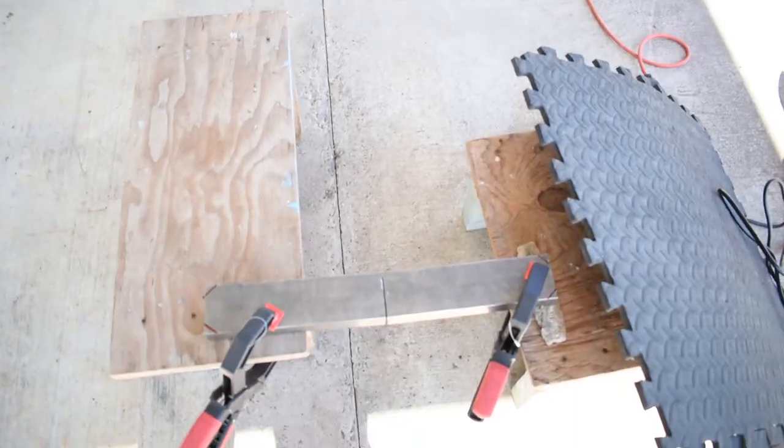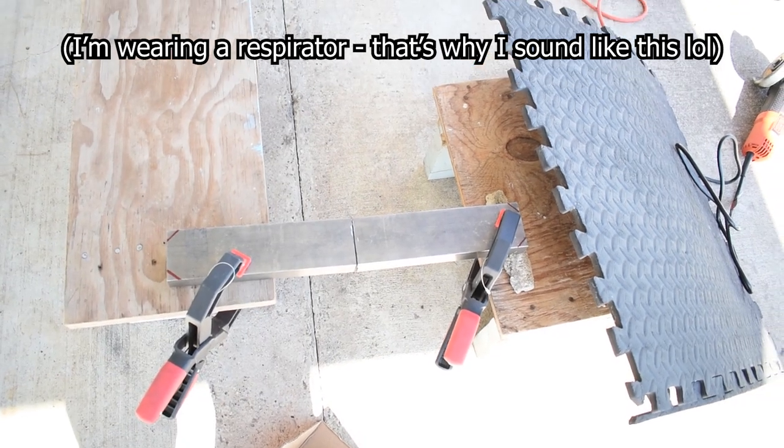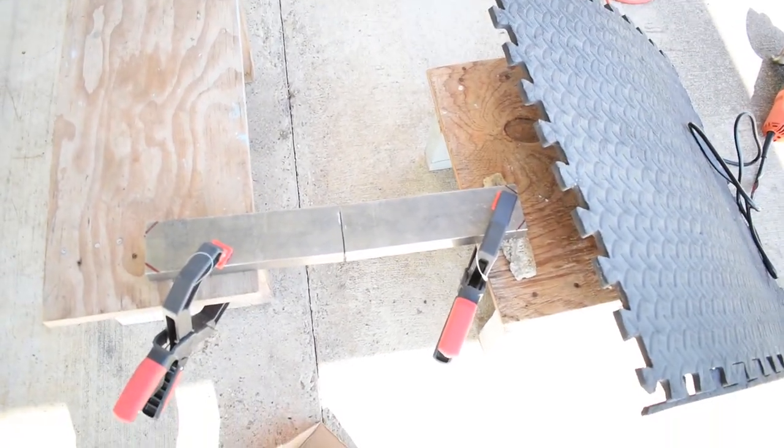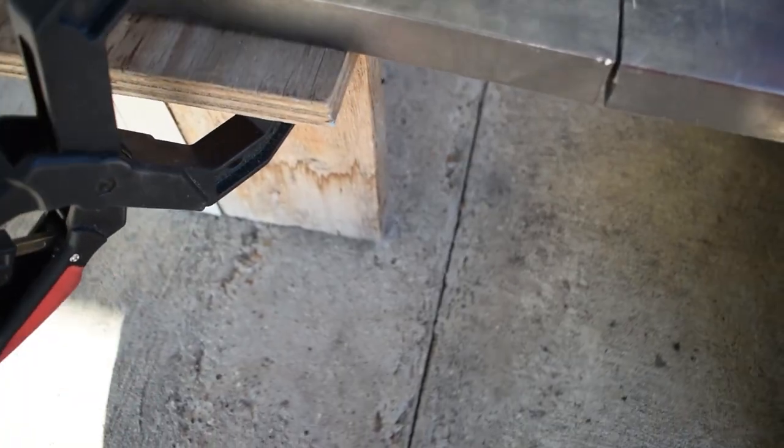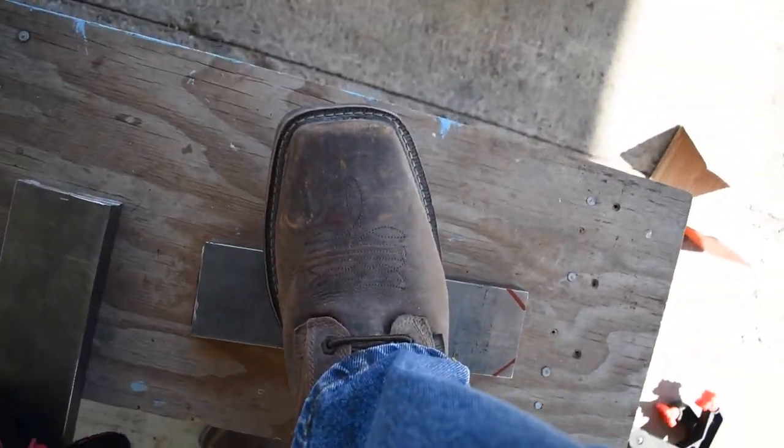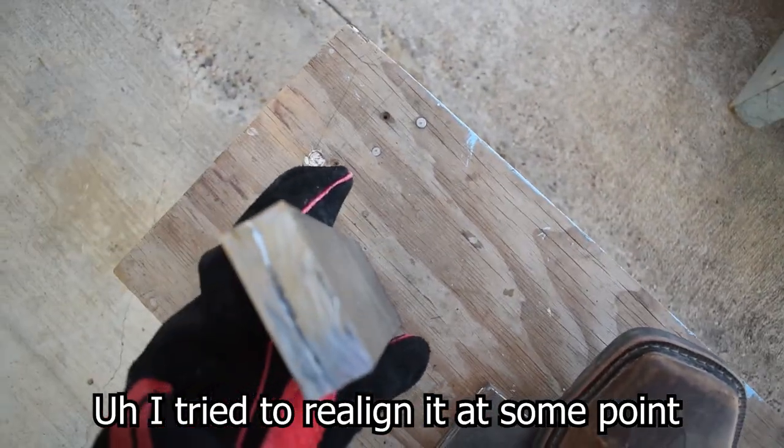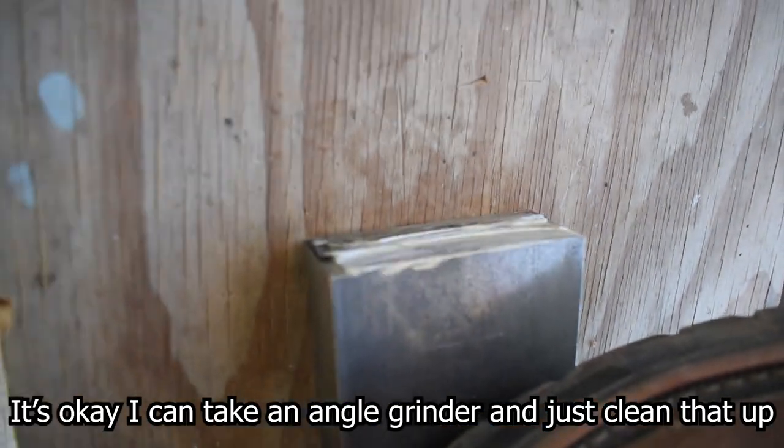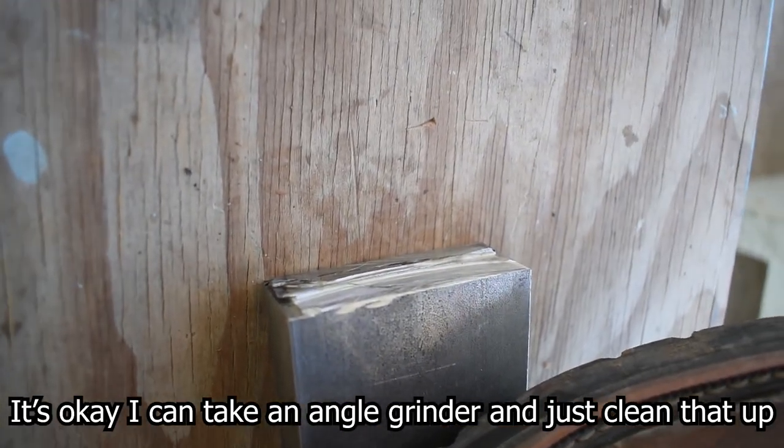I bought this as a lower carbon content steel so it's a lot softer, so it takes a lot quicker to saw through. I try to realign it at some point so that the cut is not... it's okay, I can take an angle grinder and just clean it up.